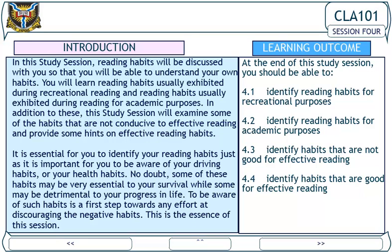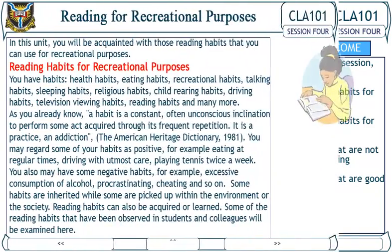This is the essence of this session. Lesson outcomes: when you have studied this session, you should be able to: one, identify reading habits for recreational purposes; two, identify reading habits for academic purposes; three, identify habits that are not good for effective reading; and four, identify habits that are good for effective reading.